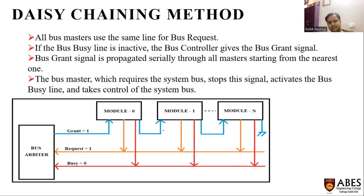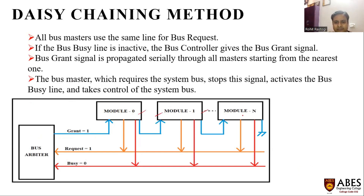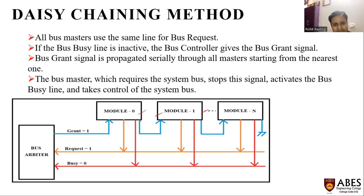In the daisy chain method, the term comes from European daisy flowers, where there is a sequence of flowers interconnected one by one. Similarly, module 1 is interconnected to module 2, which is interconnected to module 3, and so on until all modules are interconnected. There is a component called the bus arbiter, acting as a master, which provides grant and reject signals for bus service to different components. The bus arbiter provides a grant signal to module 0, which is then transferred to module 1 and up to module n. If there is a problem inside any module, the grant signal will not be forwarded.